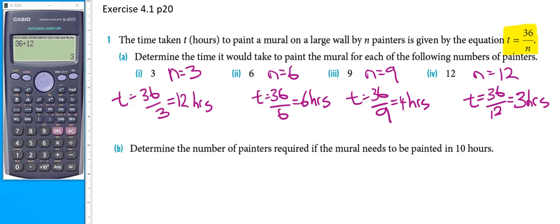When you have twice as many painters, going from 3 painters to 6 painters, that actually halves the time from 12 hours to 6 hours.